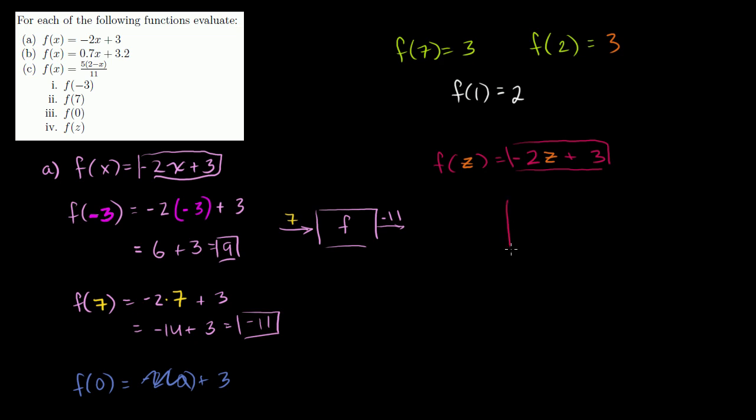If you imagine our box, the function f, you put in a z, you are going to get out negative 2 times whatever that z is plus 3. That's all this is saying. It's a little bit more abstract, but same exact idea. Now let's just do part c.